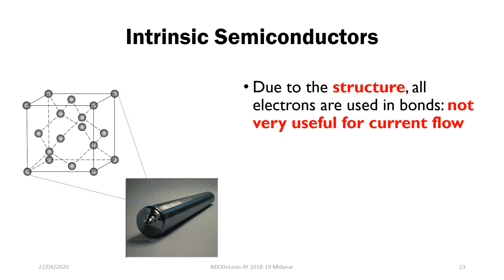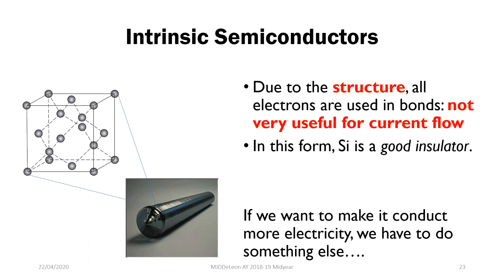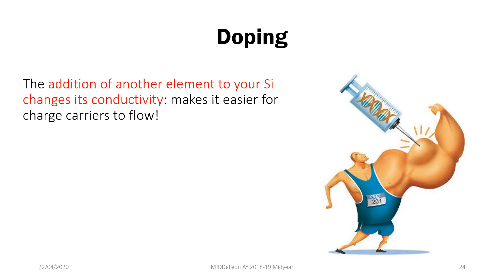For intrinsic semiconductors, all electrons are usually used in bonding, meaning there are not enough free electrons to conduct by itself. Silicon in its intrinsic form is actually a good insulator. To make it more useful for conducting electricity, we have to do doping. Doping is the addition of impurities of another element to your semiconductor — most commonly silicon — to change its conductivity. These dopants make it easier for charge carriers to flow.